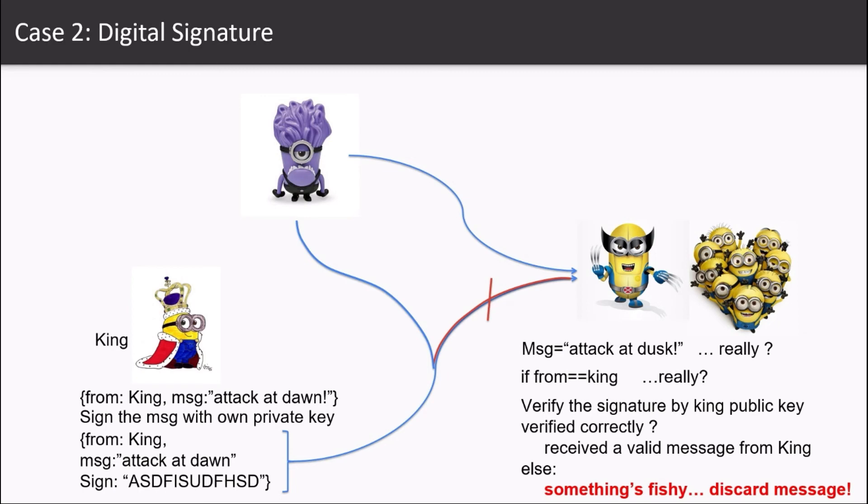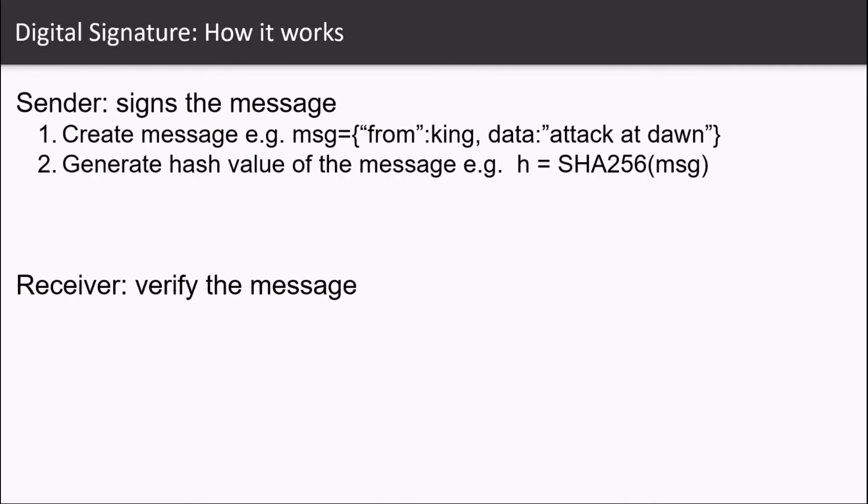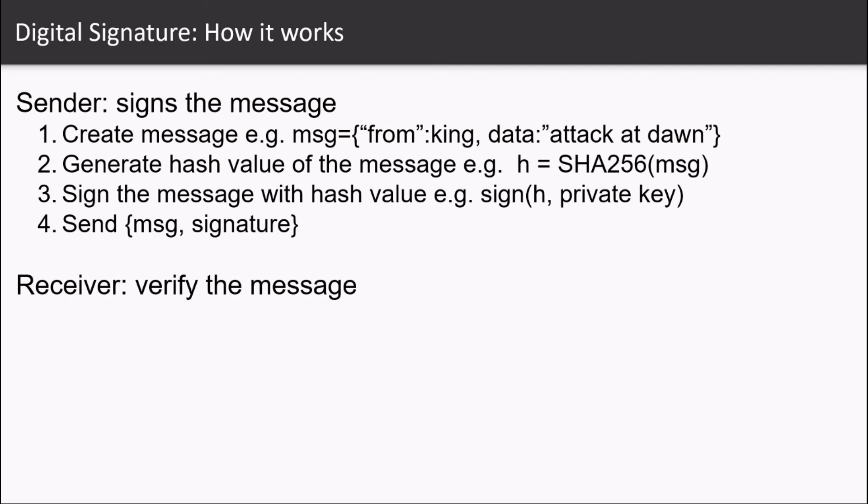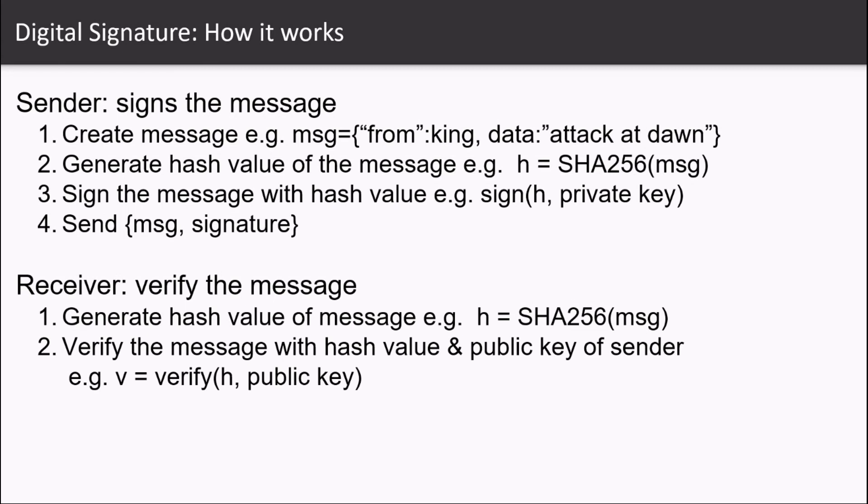So how does the digital signature work? The sender signs the message and the receiver verifies the message. Now during signing, it creates the message and it generates the hash value of the message. It can be any hash algorithm but it has to be the same in signing and verifying. So let's say we use SHA-256. Then we sign the message with the hash value and send the message along with the signature. On the other hand, the receiver generates the hash value of the message as it was done in the second part of the sender. Then it verifies the message with the hash value and the public key of the sender. And at last it compares the verified value against the received signature. If it matches then we have fulfilled all of the three conditions of the digital signature.